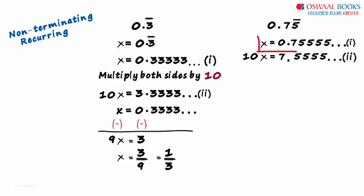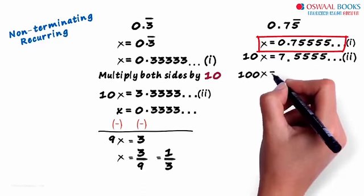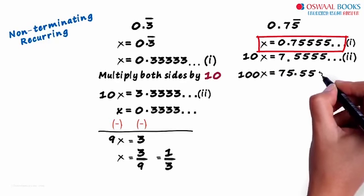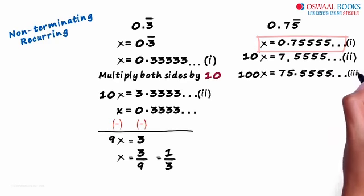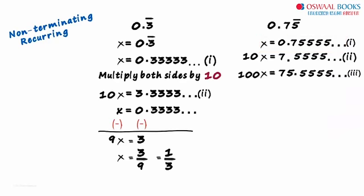We multiply equation 1 with 100. That gives us 100x equals 75.5555 and so on. So now we have two equations which have just 5555 after the decimal point.